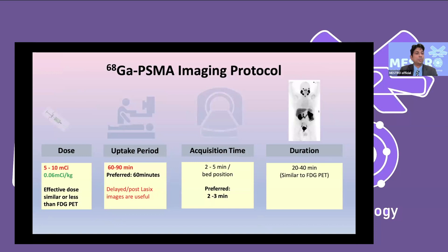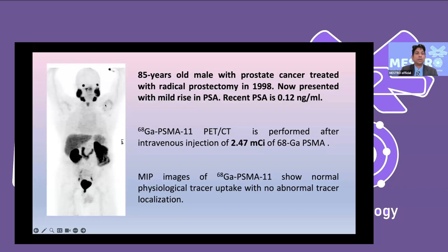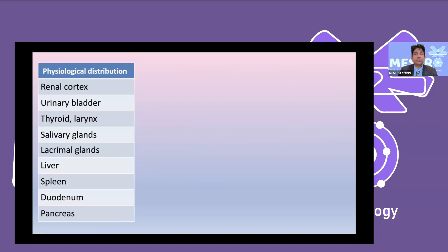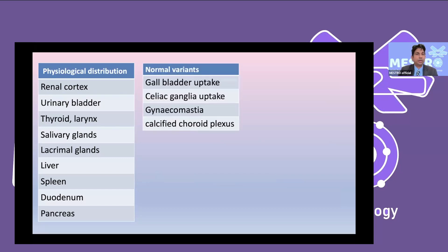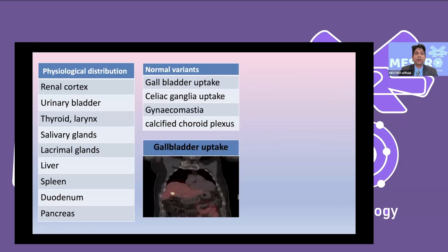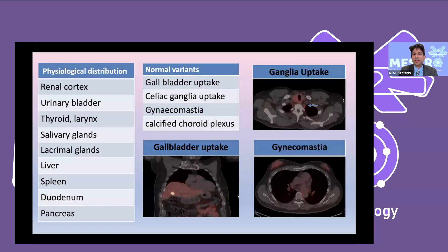For the gallium-PSMA protocol, we use around 5 to 10 mCi, with imaging performed 60 to 90 minutes post-injection. It requires 2 to 3 minutes per PET position, taking around 20 minutes total — or up to 30 minutes on older scanners. Normal biodistribution shows physiological uptake in the lacrimal glands, kidneys, urinary bladder, larynx, salivary glands, and spleen. Normal variants include gallbladder uptake, celiac ganglion uptake, and mild tracer uptake in gynecomastia.